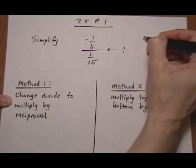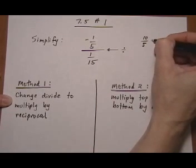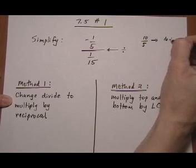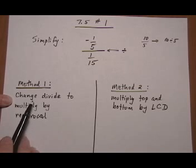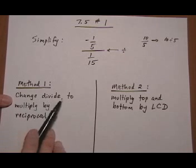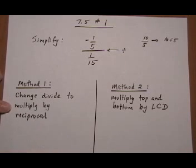Just like if you had 10 over 5, that's really the same as 10 divided by 5. We can think of it the same way with a complex fraction. What we're going to do for the first method is change the division into multiply by the reciprocal.